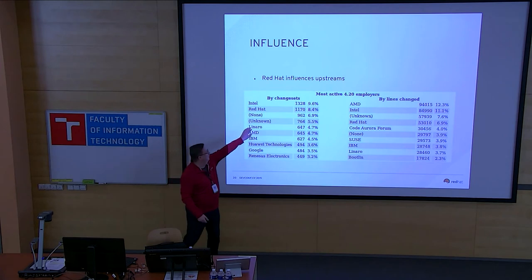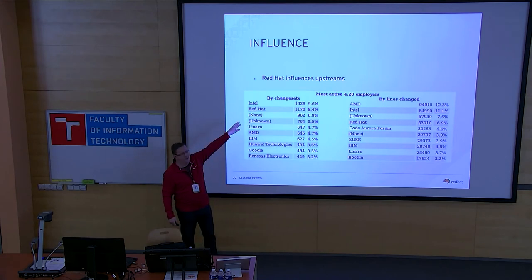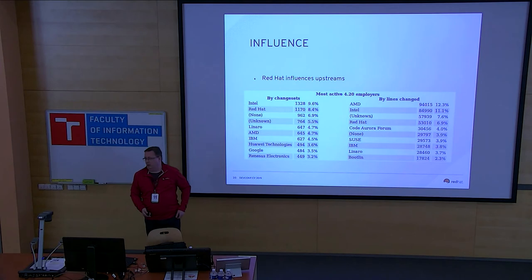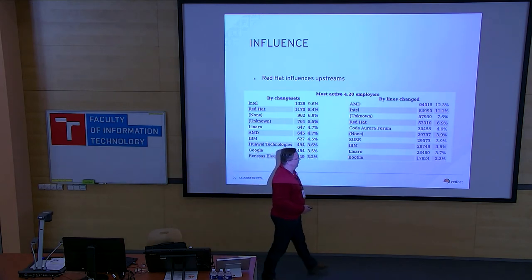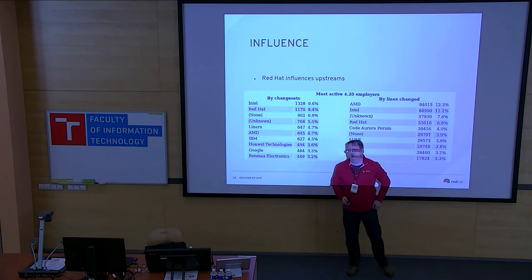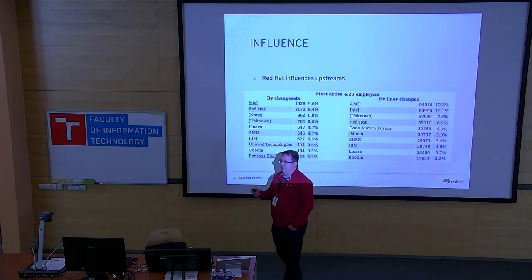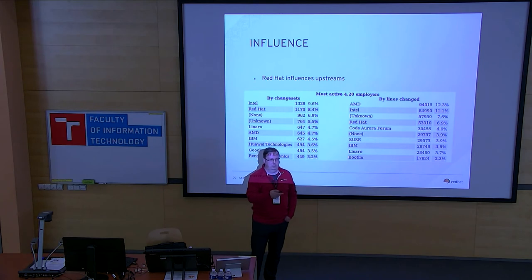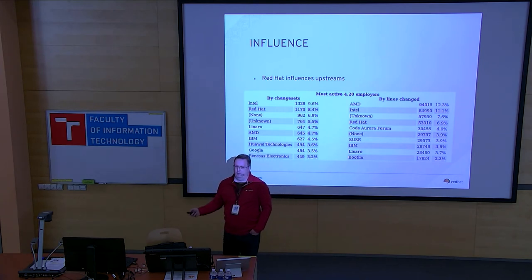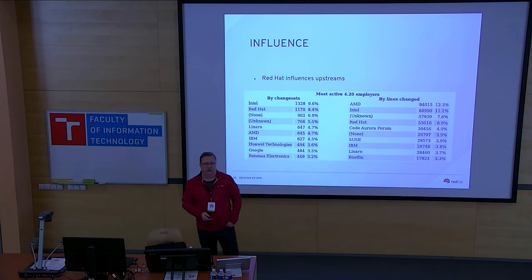When you look at the kernel data, we are second in comparison by change set and in fourth place by comparison of how many lines we changed in the 4.20 kernel. As a program manager, I look at the number differently. Let's pick seven percent — does the seven percent of code we contributed mean we had control over what it does? We had to push it through the kernel community's approval process, maybe working with Intel engineers and customers. But 93 percent came from elsewhere, from very good places — AMD, Intel, who are probably the best to support their chipsets.